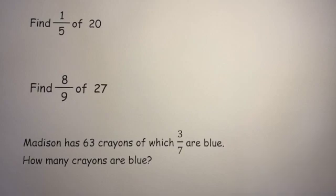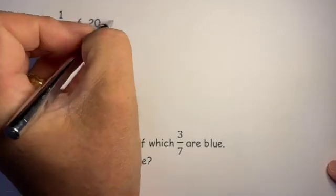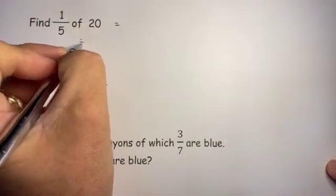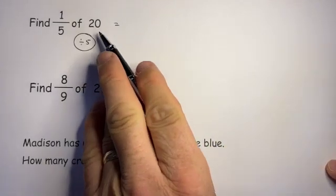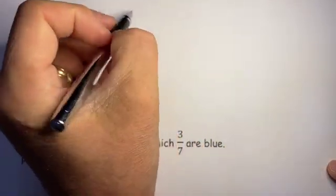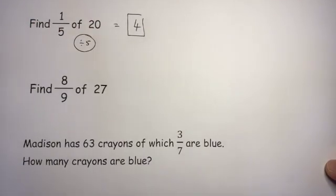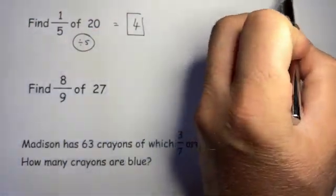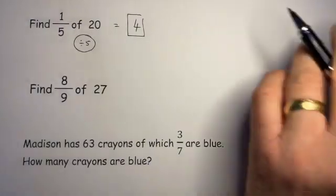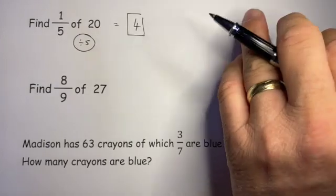Here we've got three questions on fraction of a quantity. To work out 1/5 of 20, we divide by 5, and if I divide by 5 I get 4 — there's your answer. I could draw my 5 piles, each one having 4 in it: 4, 4, 4, 4, 4, which makes 20.